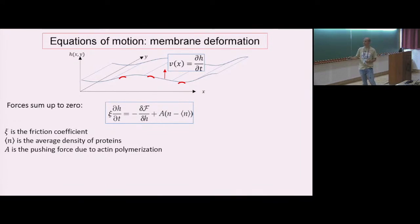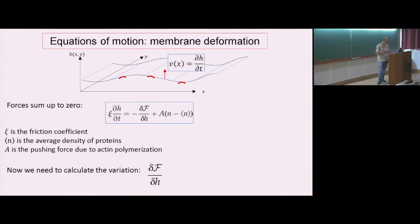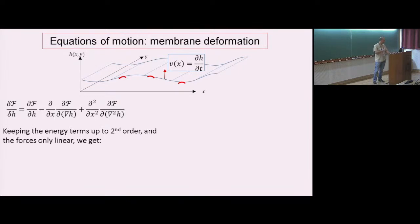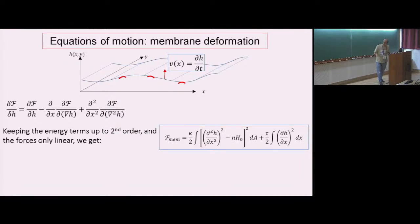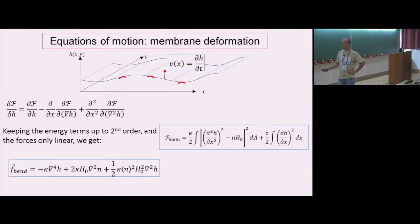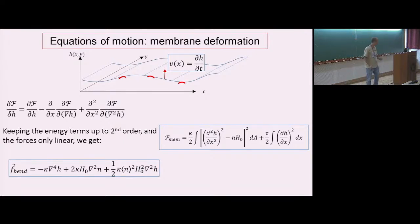Performing the variation of the free energy with respect to h (keeping only second-order terms), we obtain forces with the following structure: first, a term from the pure bending — the minus κ times the fourth derivative, which we can verify restores the membrane toward uniformity for an outward bump (a sanity check: the fourth derivative of a bump shape is positive, times a negative coefficient gives a restoring force). This confirms the bending energy term behaves as expected.